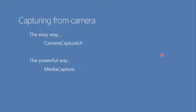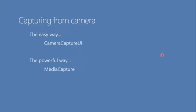There are two ways to capture media on a device: the easy way and the powerful way. The easy way is using the CameraCaptureUI API in the Windows RT namespace. The more powerful and feature-rich way is using MediaCapture, which requires more configuration but gives you more control — such as selecting specific devices or accessing lower-level functionality.